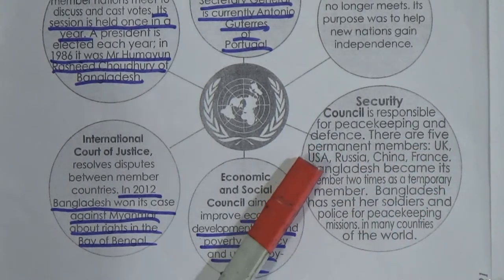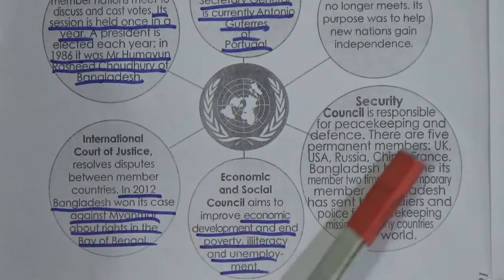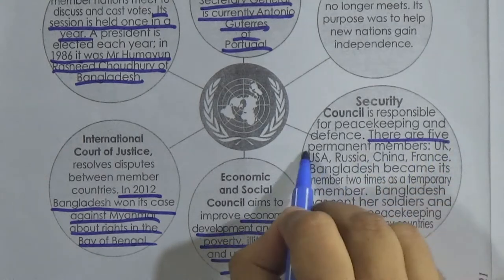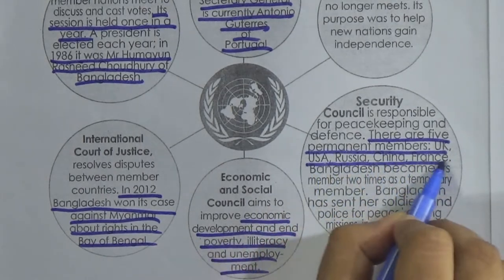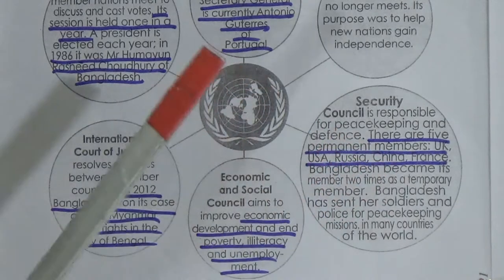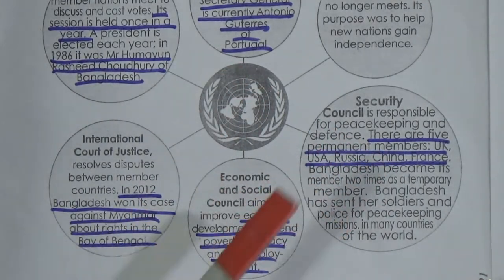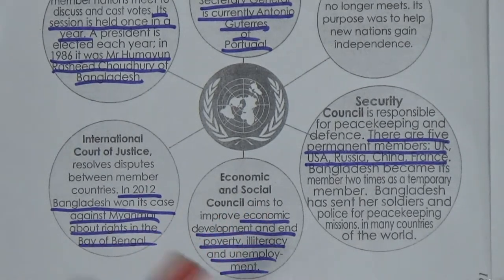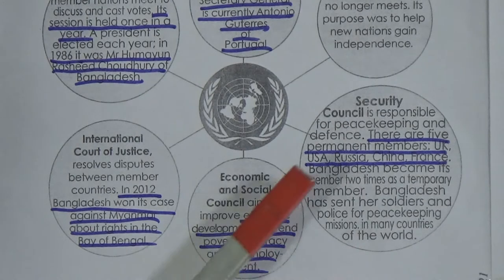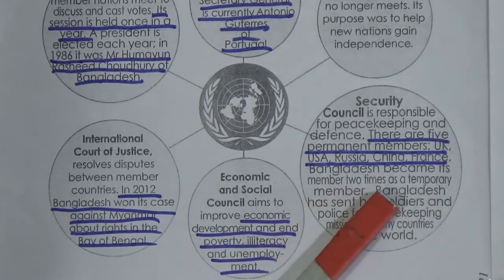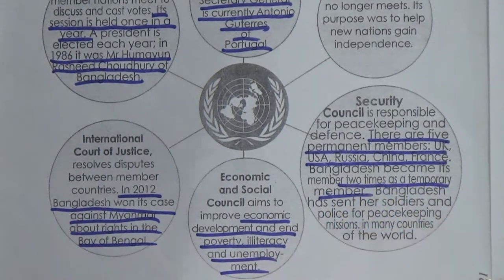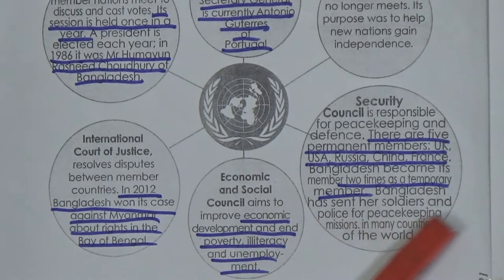The Security Council is responsible for peacekeeping and defense. There are five permanent members: the UK, USA, Russia, China, and France. In total there are ten Security Council members, but the other five are not permanent. Bangladesh became a temporary member of the Security Council two times, and has sent soldiers and police for peacekeeping missions in many countries of the world.